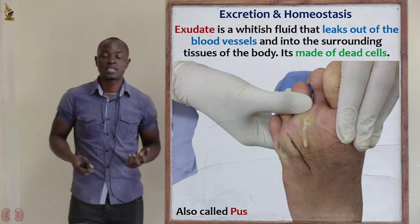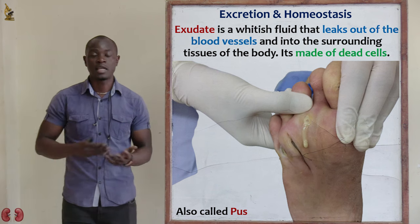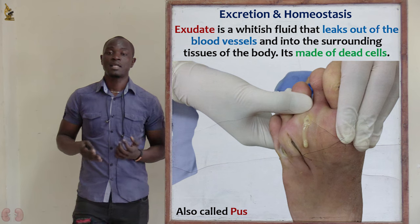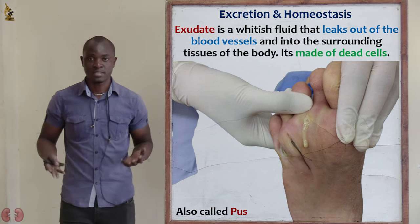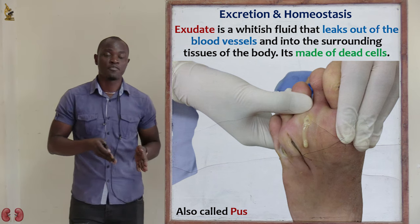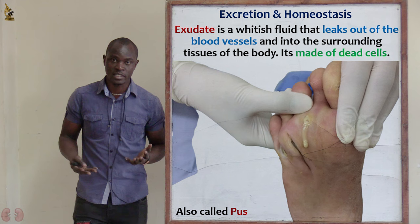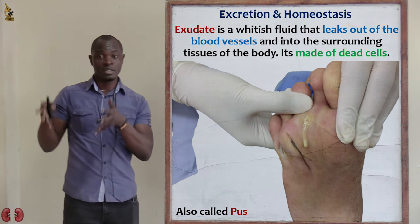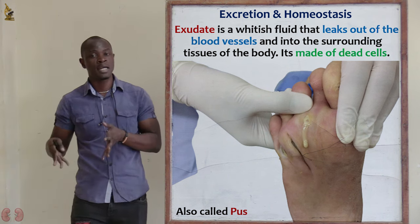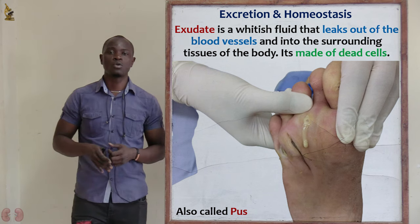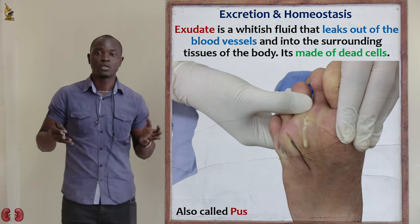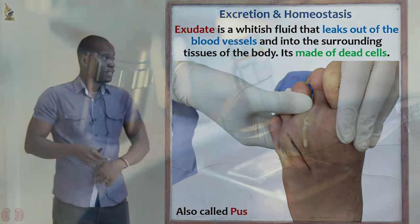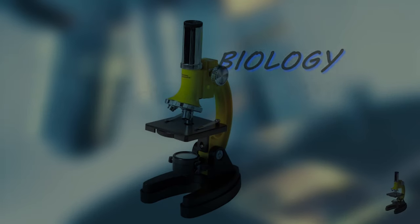Exudate can also be called pus — the common term most people use. In Kiswahili it is called myra. So if you know myra you know what pus is, and if you know pus you know what exudate is in biology.